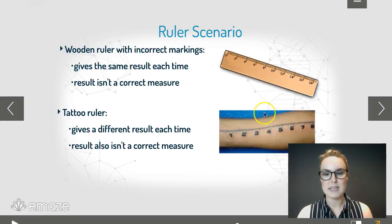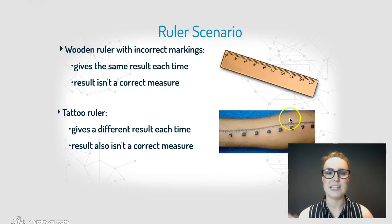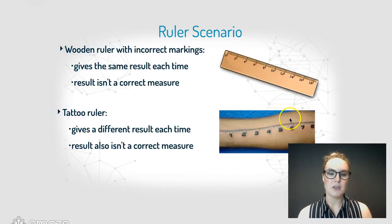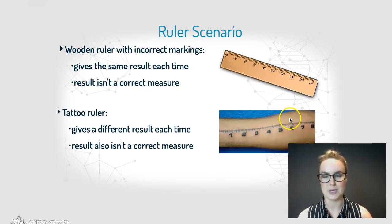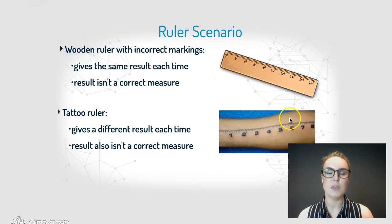The tattoo ruler on the bottom, on the other hand, gives you a slightly different result every time you measure. This is because your skin expands with heat, maybe you lose or gain weight, maybe you stretch the skin or move your arm differently — you're going to get a completely different result every time. And this result also isn't going to be correct. By fluke it might once give you a perfectly accurate measurement, but there's no way of knowing that. So which one is reliable and which one is valid? Have a think and pause the video here.